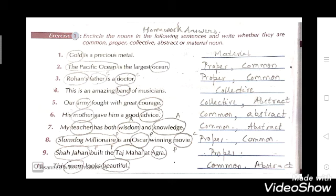Eighth: 'Slumdog Millionaire is an Oscar-winning movie.' Slumdog Millionaire is a proper noun, Oscar is a proper noun, movie is a common noun. Ninth: 'Shah Jahan built the Taj Mahal.' Shah Jahan is a proper noun, Taj Mahal is a proper noun, Agra is a proper noun — it is the name of a city. Tenth: 'This room looks beautiful.' Room is a common noun, beautiful is an abstract noun.